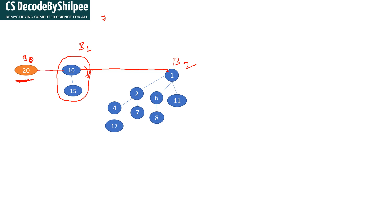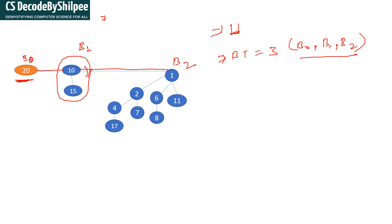So the total number of nodes inserted is 11. How many binomial trees are there? There are 3 binomial trees. Their degrees are B0, B1, and B3. If you convert 11 into binary format — as I explained in the previous video — the number of possible binomial trees is at most log base 2 of n, based on the number of bits.